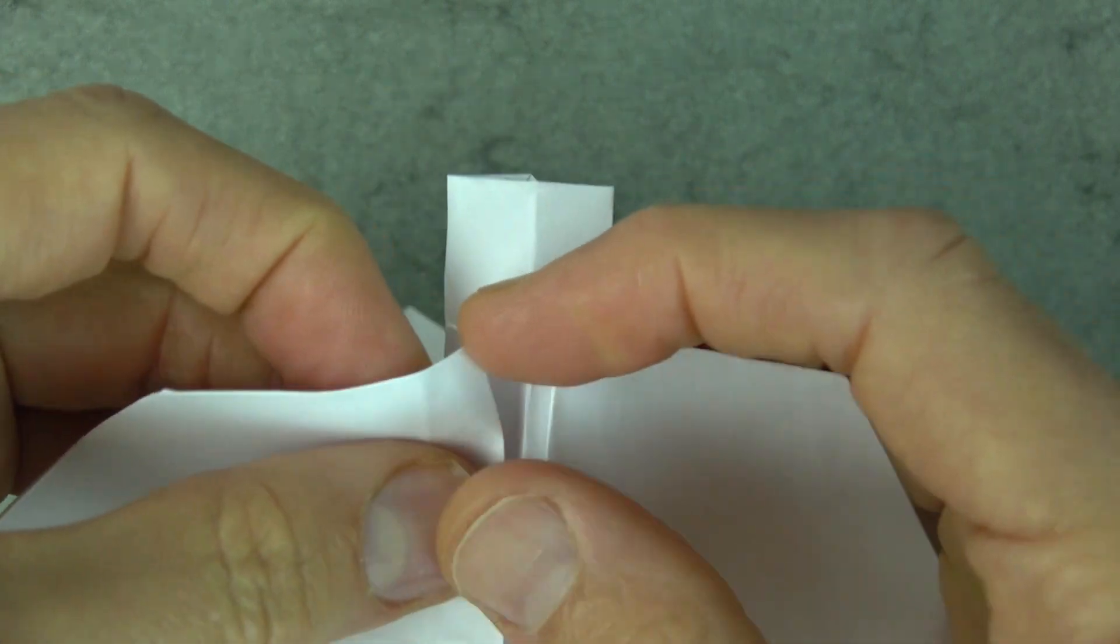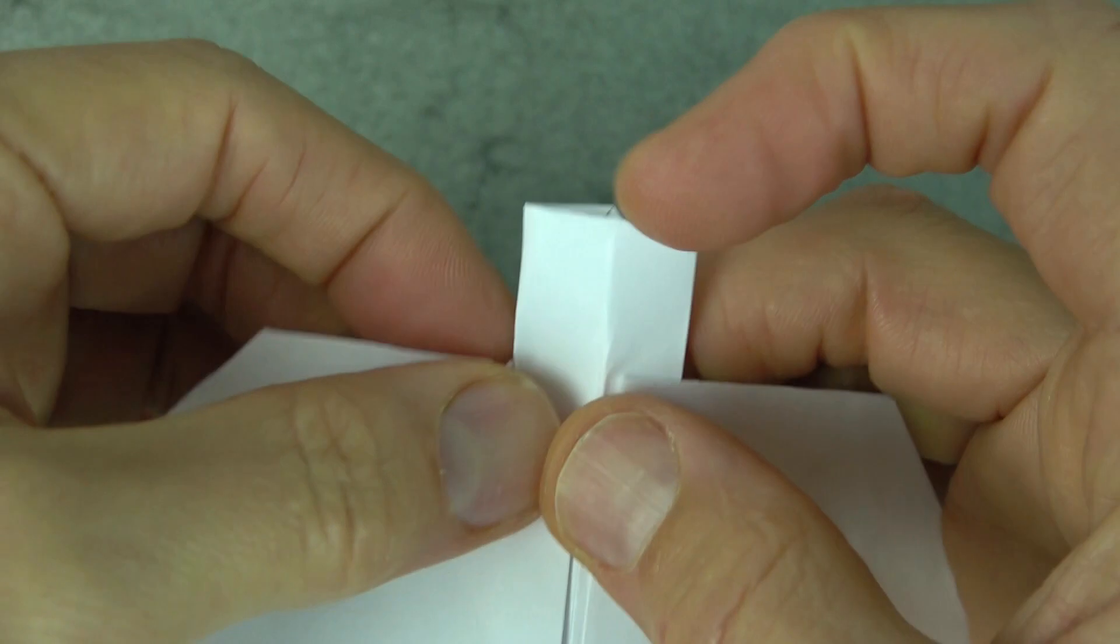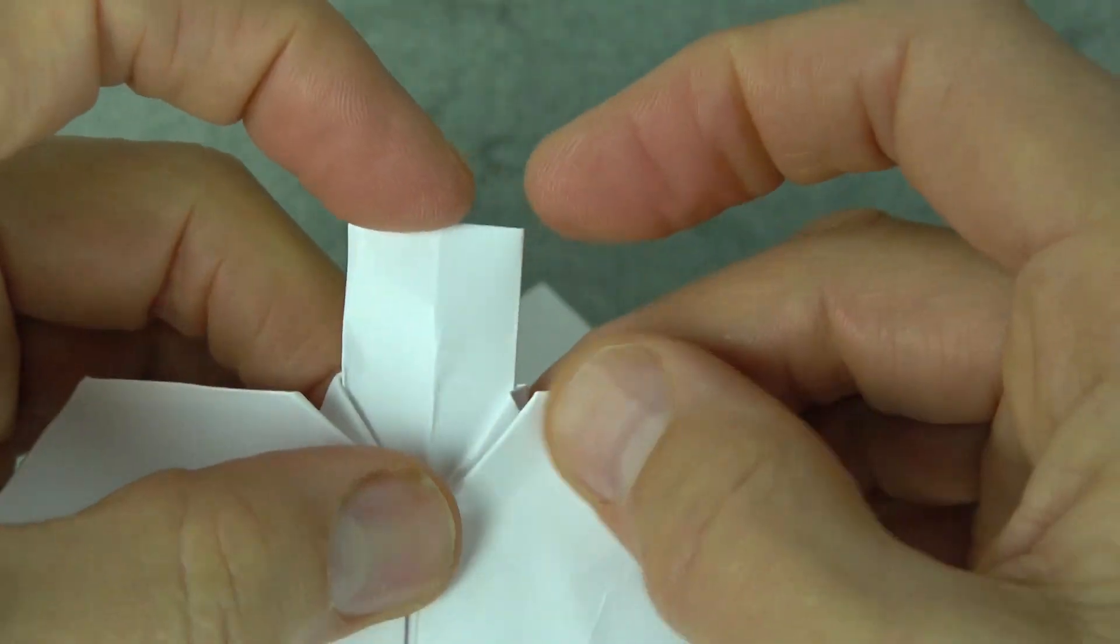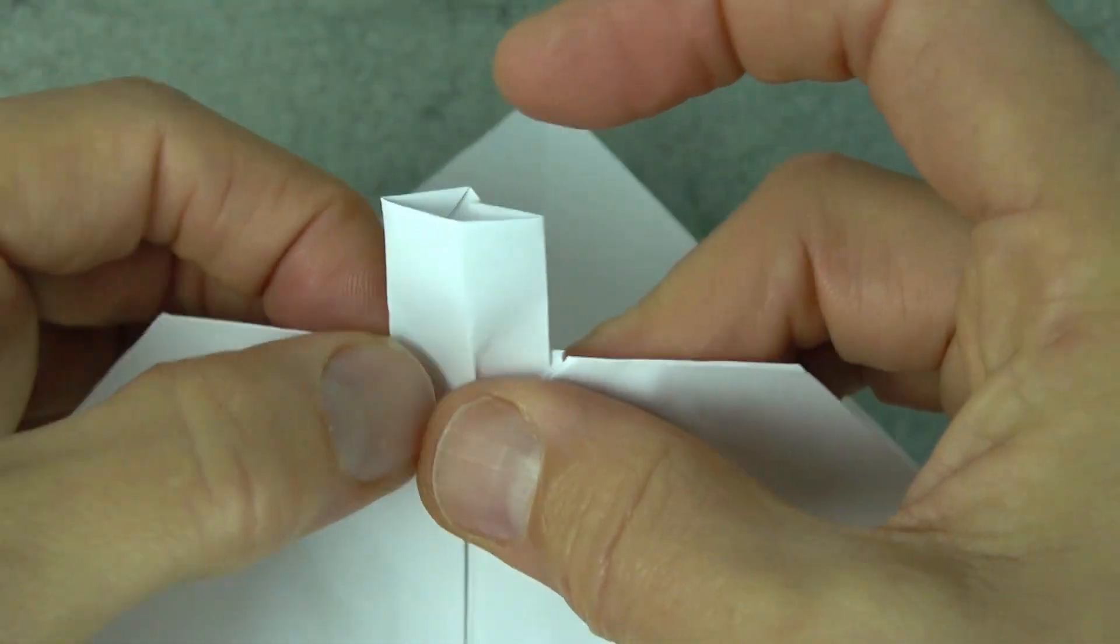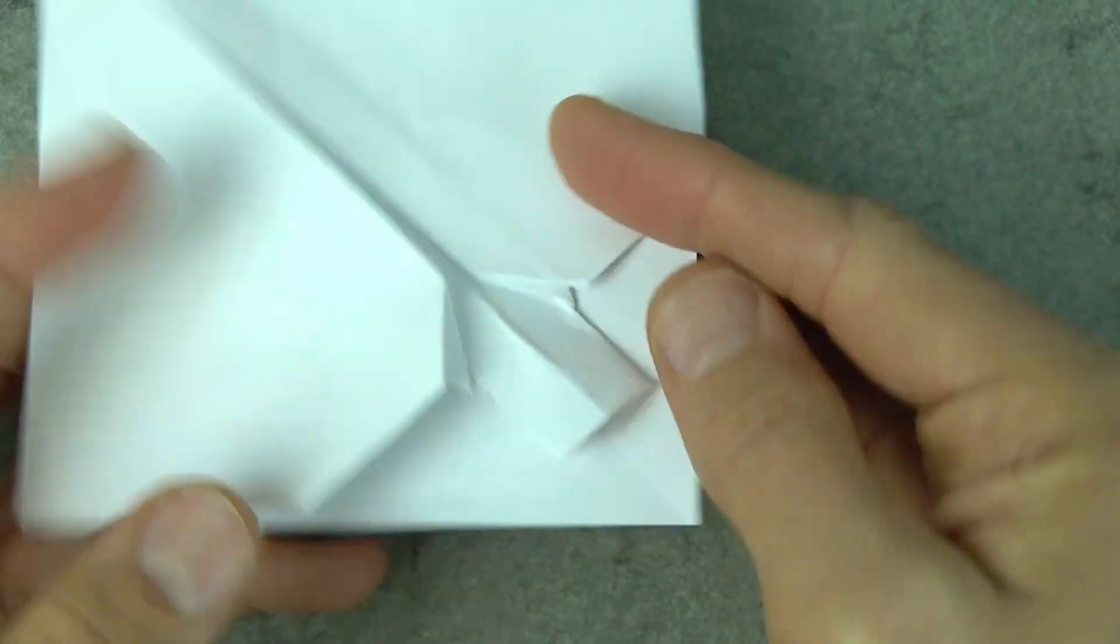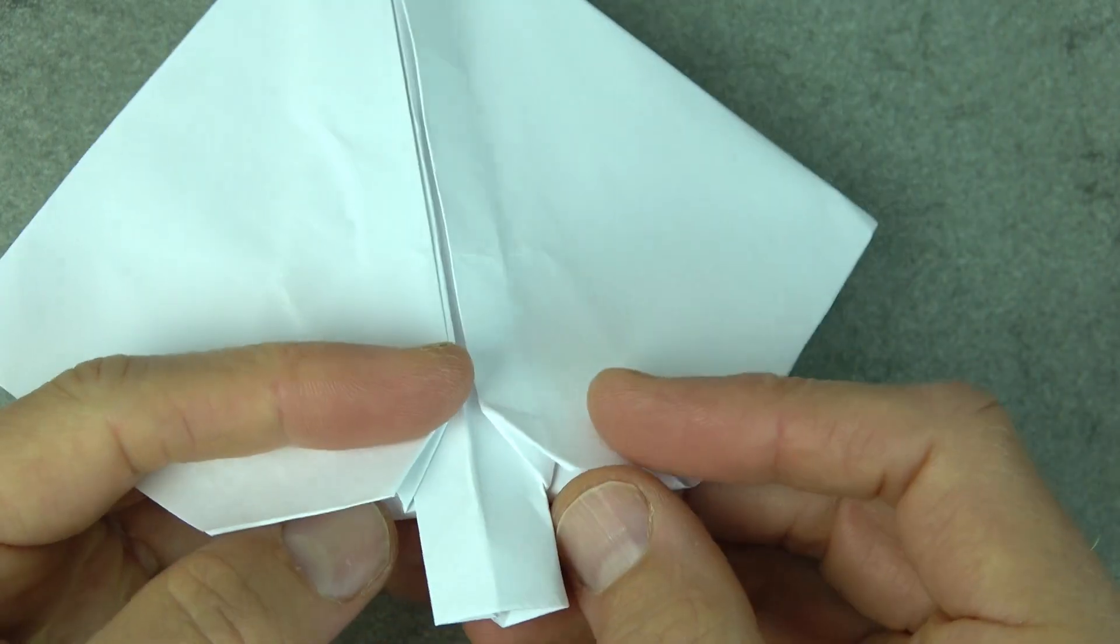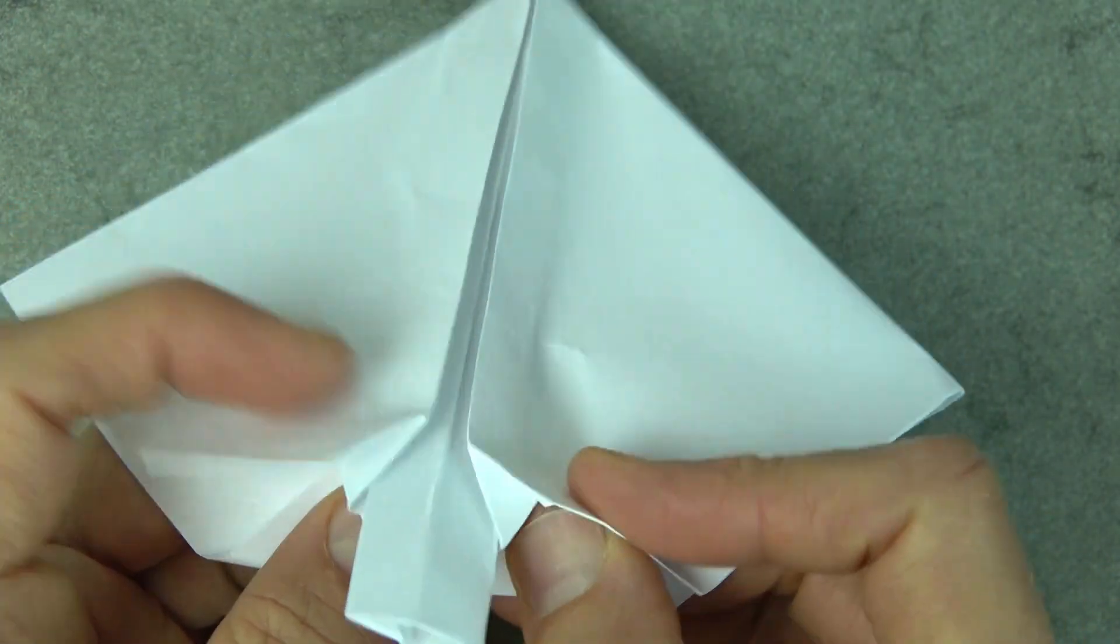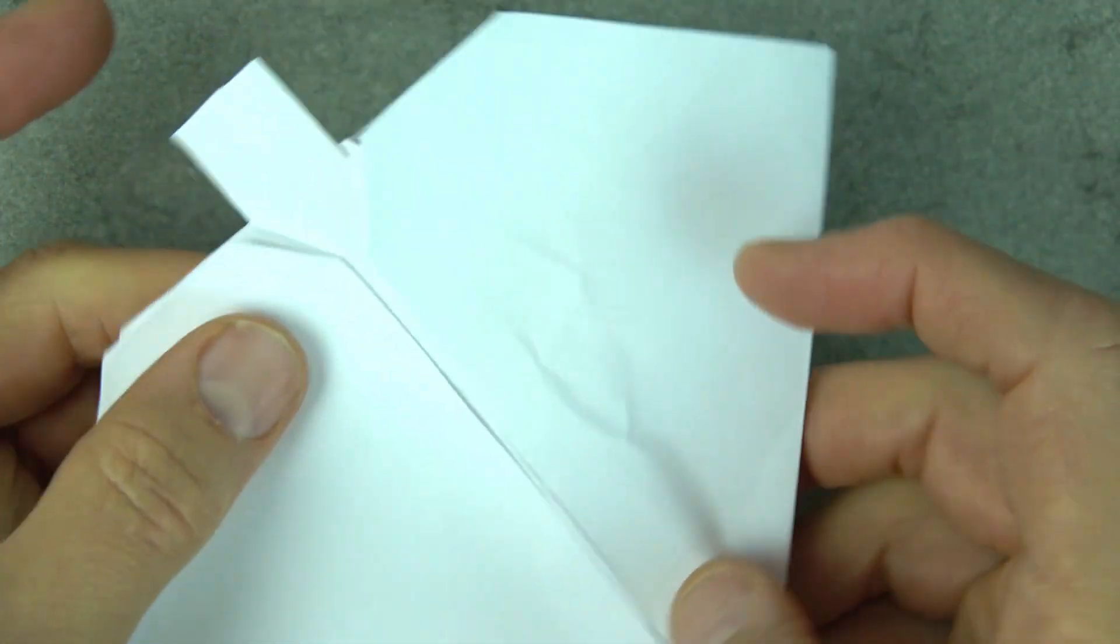And now we're going to do two little reverse folds. There, and there, to make the crevice of the heart. And rotate, and fold this flap inside, aligning it with this edge. Okay. And rotate.